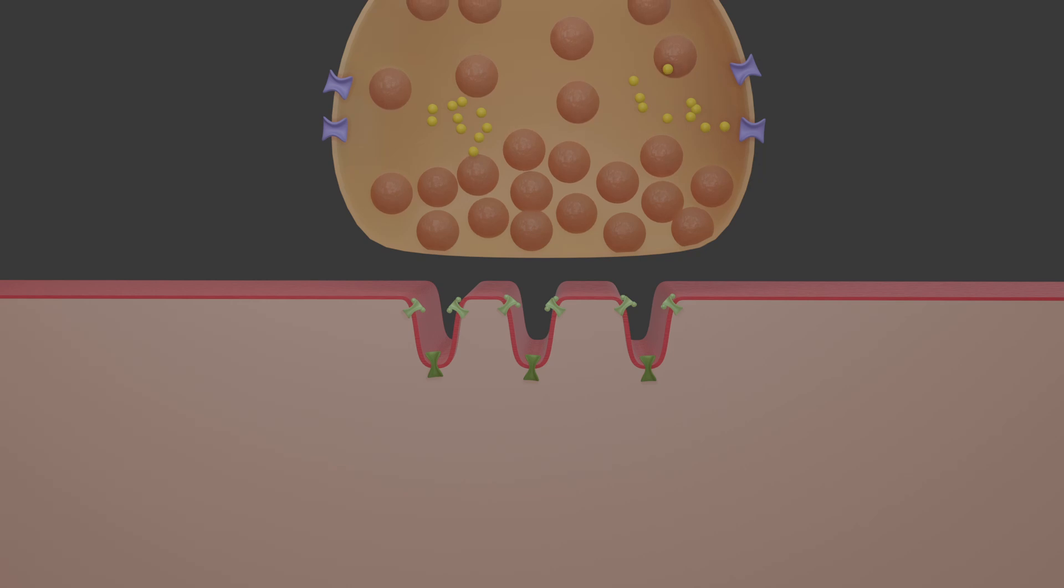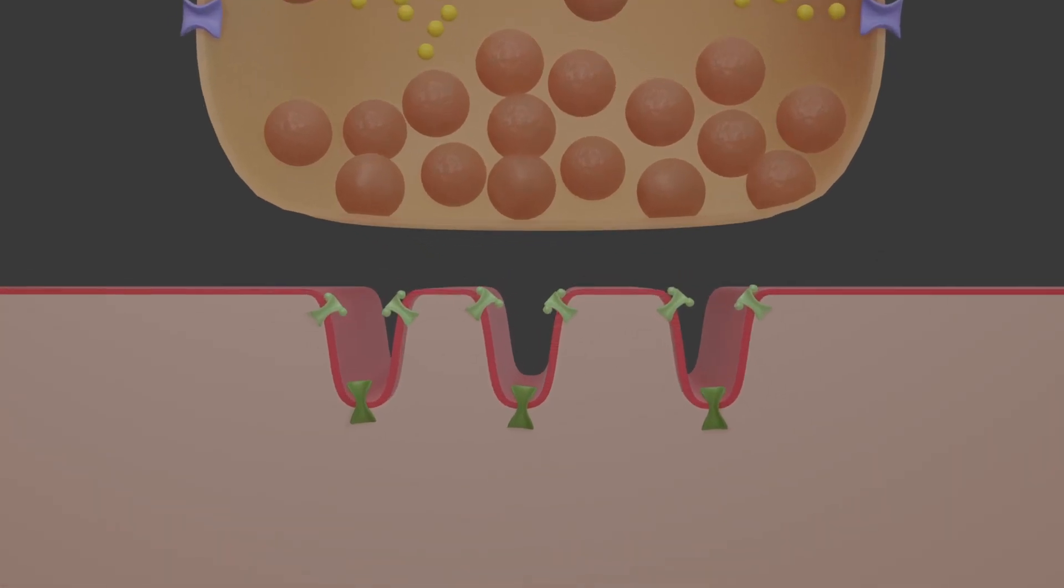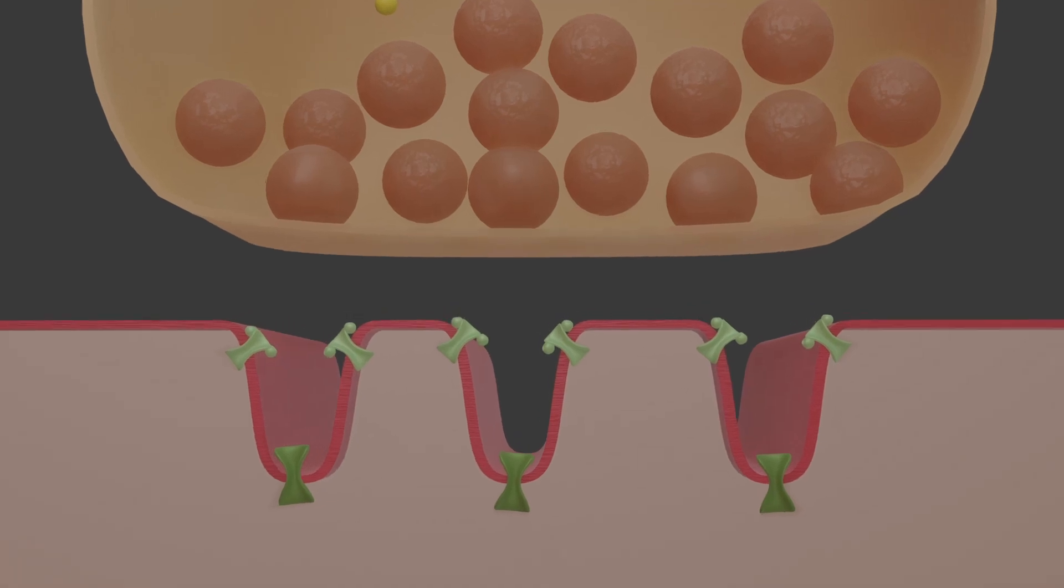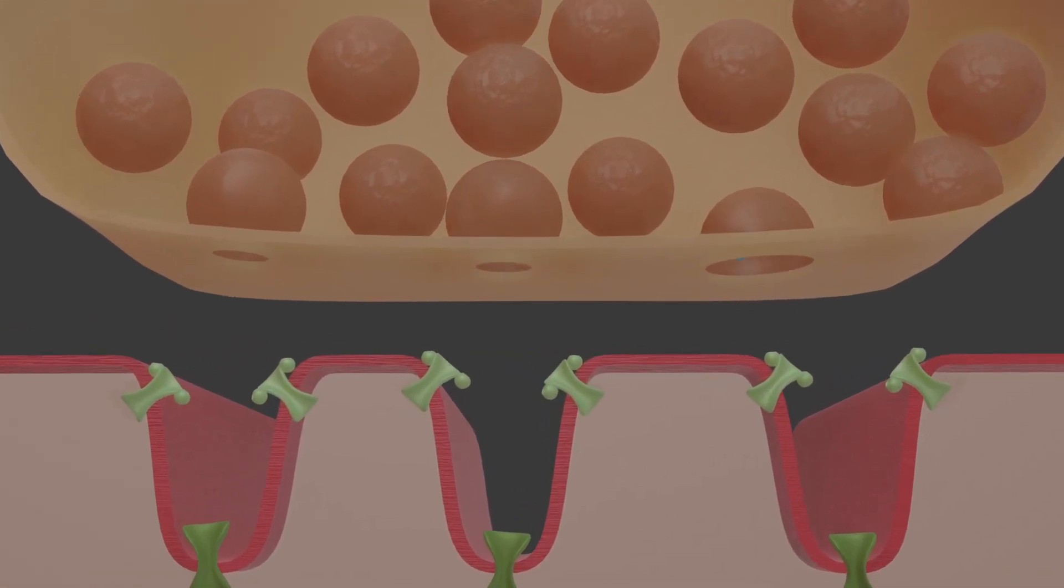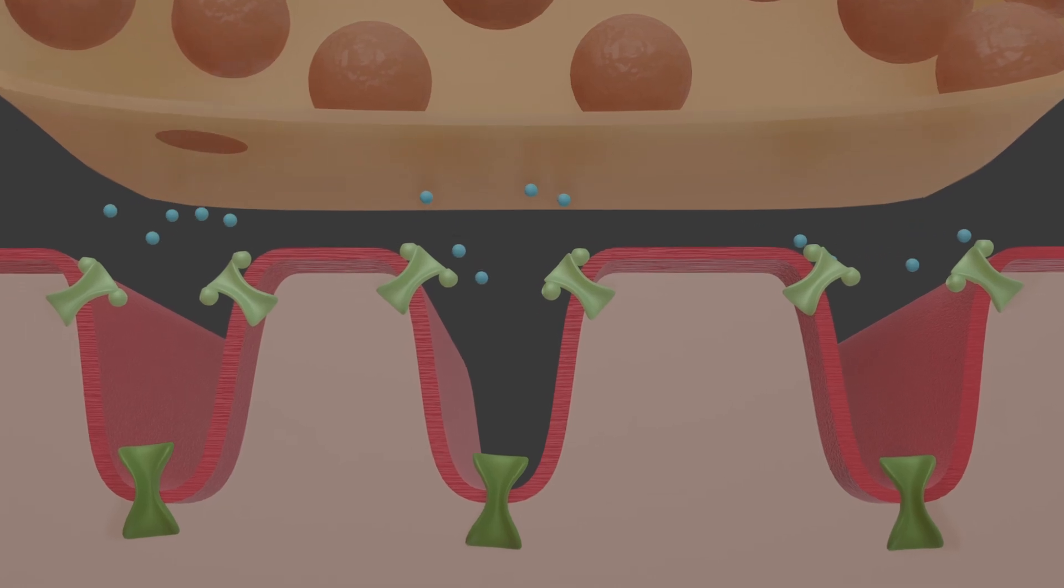In the active zone, around 300 vesicles fuse with the presynaptic membrane. The contained neurotransmitter is released and diffuses to the acetylcholine receptors on the postsynaptic membrane.